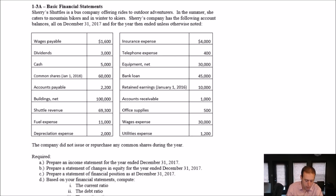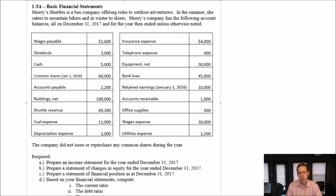The company didn't issue or repurchase any common shares during the year. And we've got to do an income statement, a statement of changes in equity, and a statement of financial position, also called the balance sheet, and do some ratios as well.